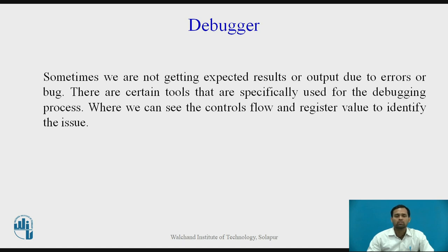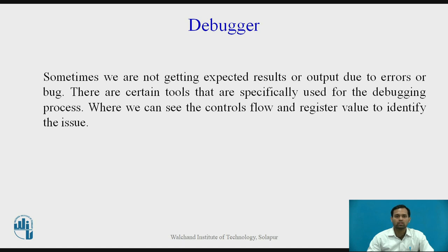Debugger. Sometimes we do not get the expected result or output due to errors or bugs in the program. There are certain tools specifically used for the debugging process, where we can see the control flow and register values to identify the issue. Generally, to detect a bug, we use a debugger.